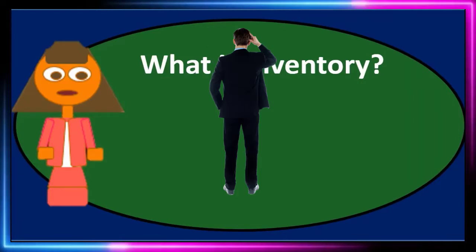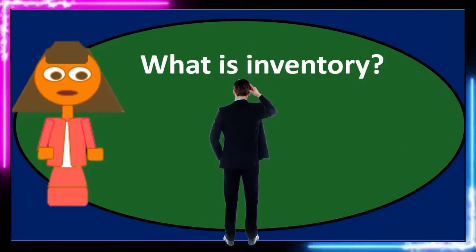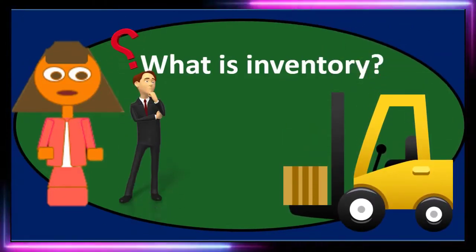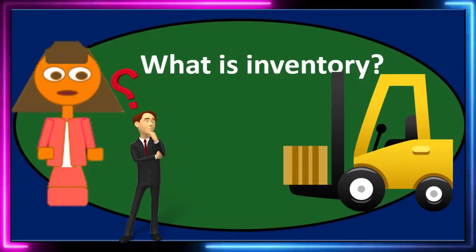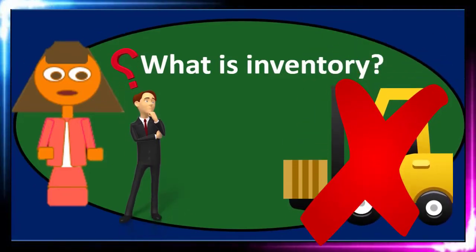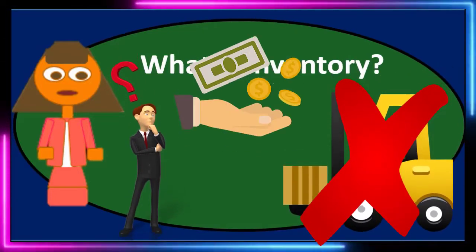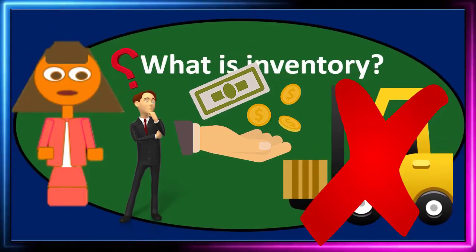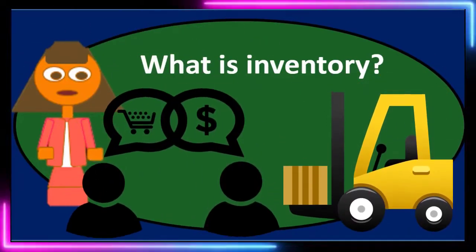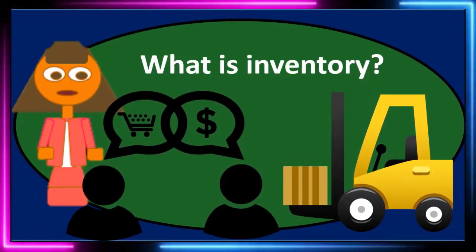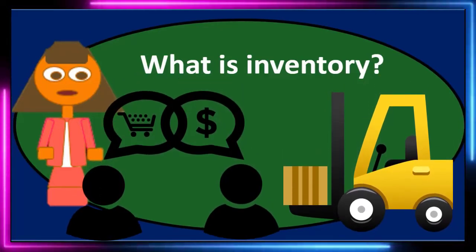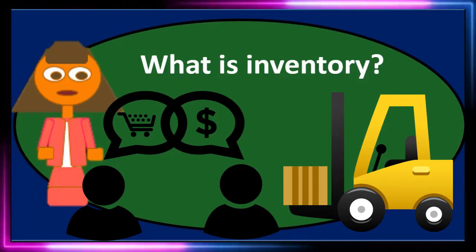To think about this, consider different types of things we could call inventory versus things that are not inventory. For example, if we had something like a forklift, it may or may not be inventory. For most companies, a forklift is probably not inventory, but rather property, plant, and equipment — something used to help generate revenue. However, if we are in the business of purchasing and selling forklifts, then the forklifts are intended for resale, and therefore they would be inventory. So that is really going to be the defining factor — intent is part of what inventory is.